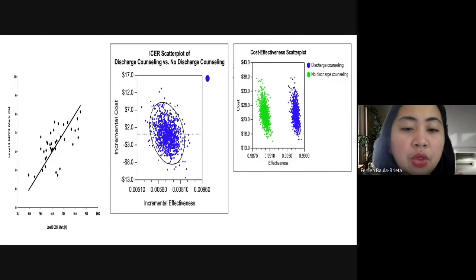So we have incremental effectiveness versus incremental cost. And then we have cost effectiveness scatter plot. Blue is for discharge counseling and green is for no discharge counseling. So you can see there is an increased effectiveness versus cost to those who have discharge counseling versus to those who did not receive discharge counseling. So when you see it right there, you will be reader like me or you will be able to see directly.